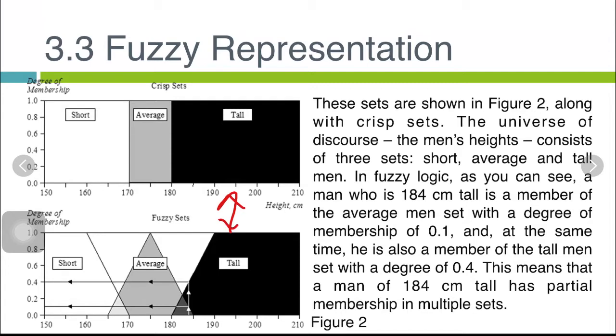The universe of discourse, the x-axis, the man's height, consists of three sets: short, average, and tall men. In fuzzy logic, as you can see, a man who is 184 cm tall is a member of the average set because it points out into the line of the average set.